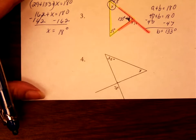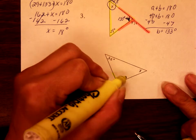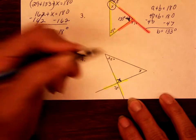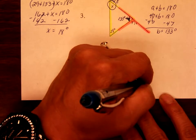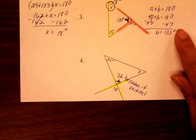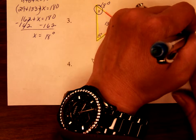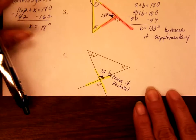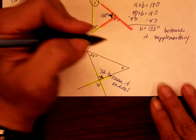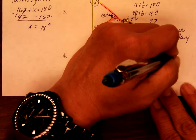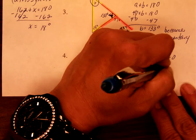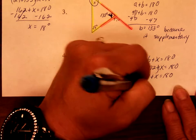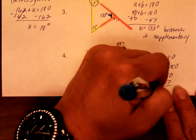Looking at number 4 — if I highlight this part, you should know from the previous lesson what that makes. Hopefully you said it makes a vertical angle. So this angle here should be 72 degrees because it's vertical. Now that you have your two degrees in the triangle, you can do it algebraically: a plus b plus x is equal to 180. 35 plus 72 plus x is equal to 180. Add up your 35 plus 72, which is 107 plus x is equal to 180. Subtract 107 on both sides, and you get x is equal to 73 degrees.